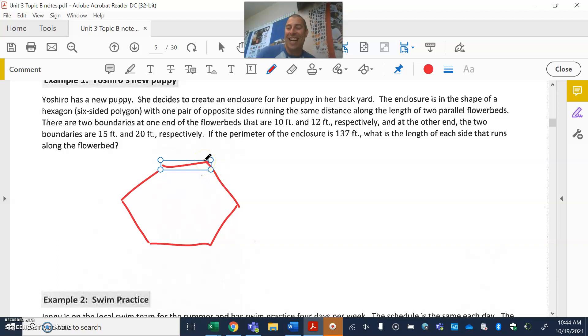Hexagon, six sides, with one pair of opposite sides running the same distance along the length of two parallel flower beds. There are two boundaries at one end of the flower beds that are 10 feet and 12 feet respectively.